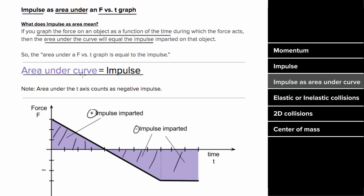Why do we care that the area is equal to the impulse? Well, if we can find the area, that would equal the impulse, and if that's the net impulse on an object, that would also equal the change in momentum of that object, which means we could figure out the change in velocity of an object.